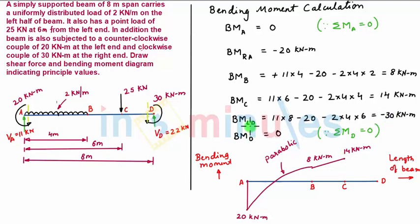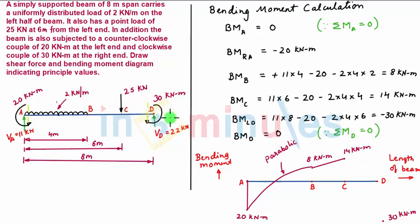At point D, towards the left of D, bending moment is minus 30 kilonewton meter, so we plot minus 30 kilonewton meter at point D and connect it. Looking at the load diagram, there is no load acting between point C and D, so again the variation of bending moment will be linear — connected with an inclined straight line.